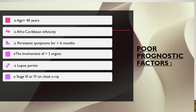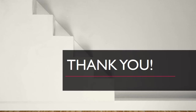Signs of poor prognosis include age more than 40 years, Afro-Caribbean ethnicity, persistent symptoms for more than six months, involvement of more than three organs, lupus pernio, and stage 3 or 4 on the chest X-ray.